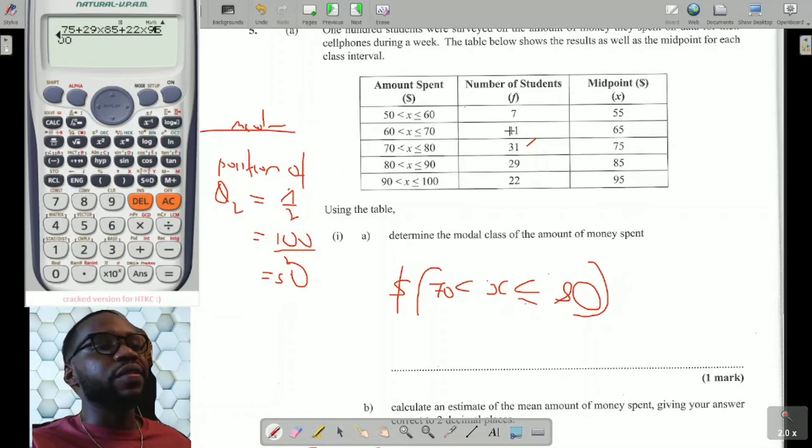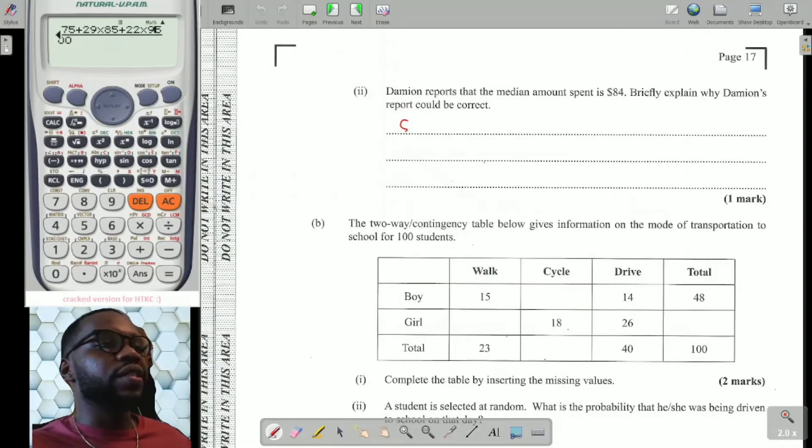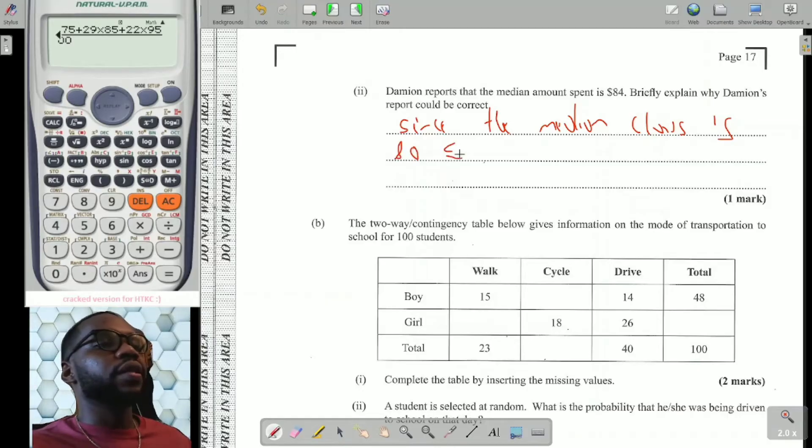So we have 7 plus 11. That is going to give me 18. 18 plus 31 would give me 49. We'll go again. 7 plus 11 gives 18. 18 plus 31 is going to give me 49. We're not there as yet. Now, when we add 49 plus 29, that's going to be way over 50. Remember, you need to get to 50. So 50 falls within this class, which is 80 to 90.